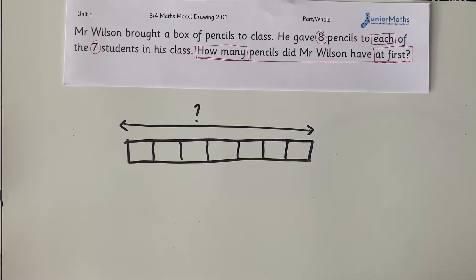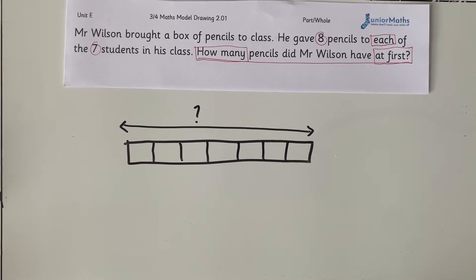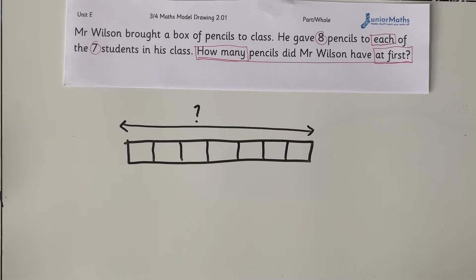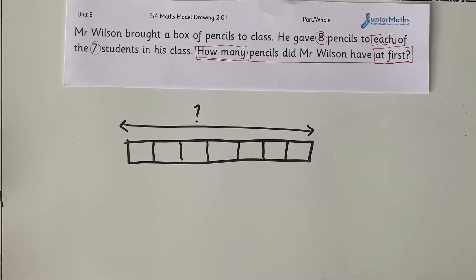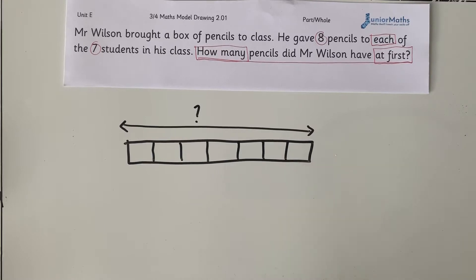There are some other strategies we can use. Seven's a bit of a hard one because it's a prime number, but there are other strategies we can use for things like fours, sixes, and eights.